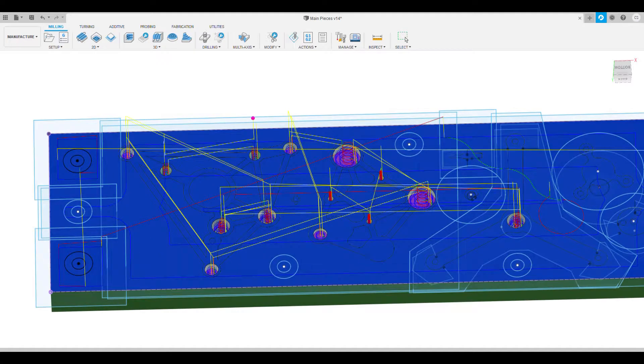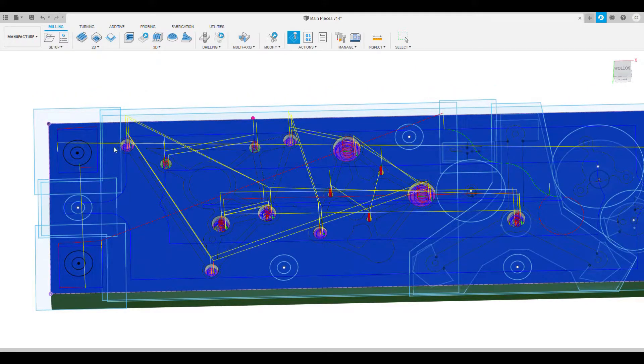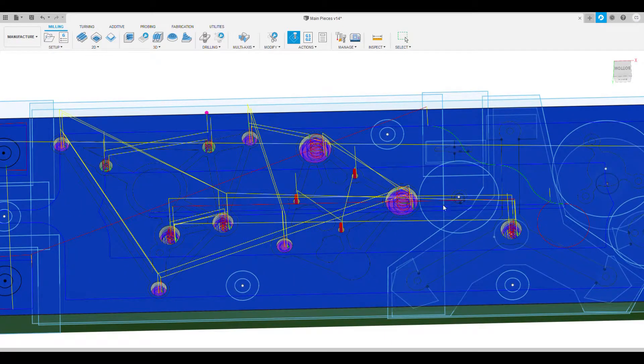Then finally we simulate again but this time we include all the pockets which are going to be machined on the backside. Once we're done with the backside it's going to look something like this.